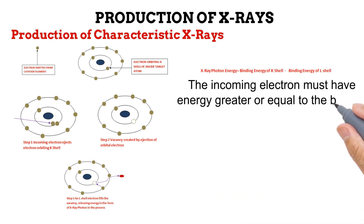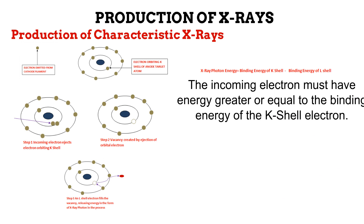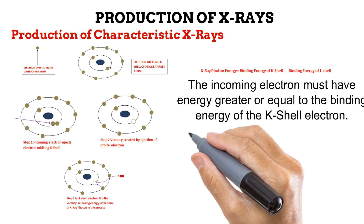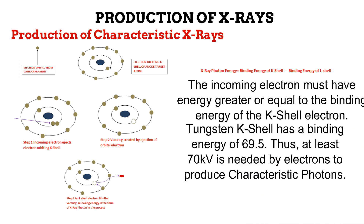There is a condition for characteristic X-ray photon production to occur: the electron coming from the cathode filament must have an energy that is equal to or greater than the binding energy of the K-shell electron it wants to eject. The most commonly used material for anode targets is tungsten. The K-shell of tungsten atoms has a binding energy of 69.5 keV. This means that a cathode filament electron needs an energy of at least 70 kilovolts to eject a K-shell electron on the anode target and produce characteristic photons. With anodes made of tungsten, using a kV of less than 70 will produce Bremsstrahlung X-ray photons.